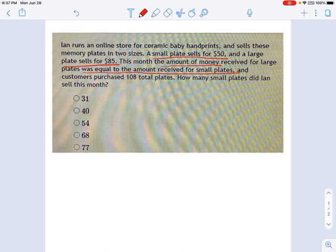How much money did he receive for these large plates? Well, I'm going to say the number of plates that were large that he sold is called L. I know, it's real creative, but L is the number of large plates, and they were $85 each. L times 85, that's how much money he got for large plates. And that was equal to the amount he got for small plates. I'm going to say the number of small plates is S, and those were sold for $50 each.